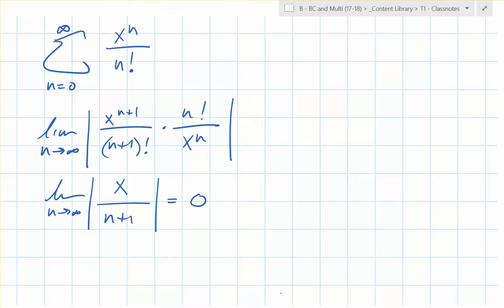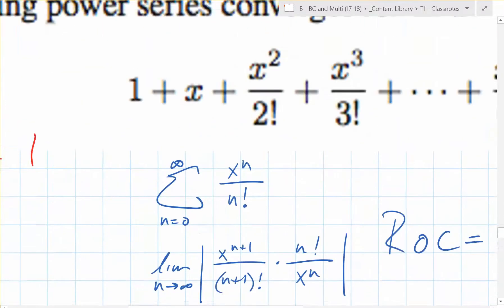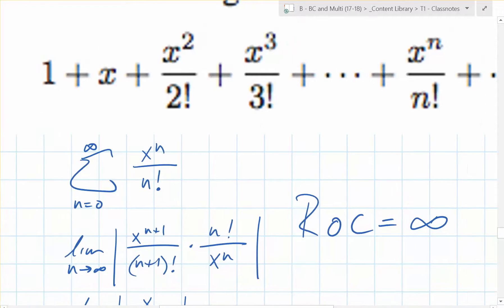No matter what x is, this is 0. What does that tell you about the interval of convergence? This comes out to always be 0. 0 is always less than 1. So the radius of convergence is infinity. For any x value, it converges.